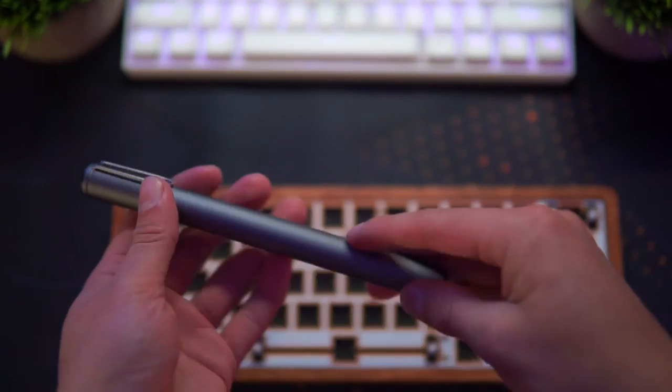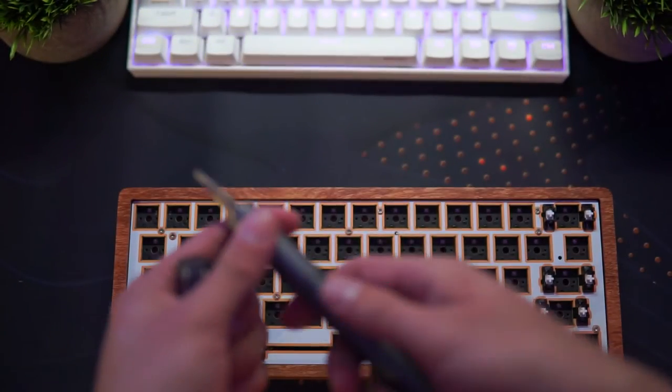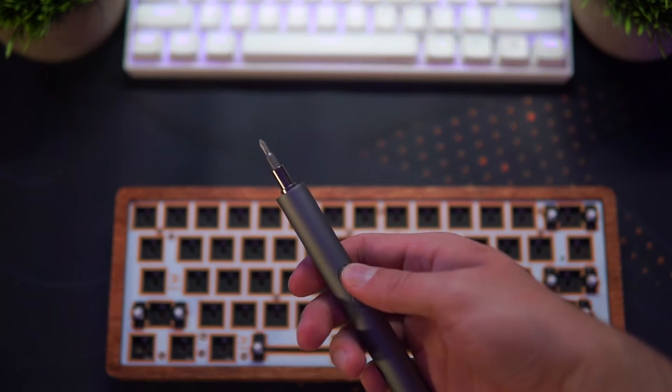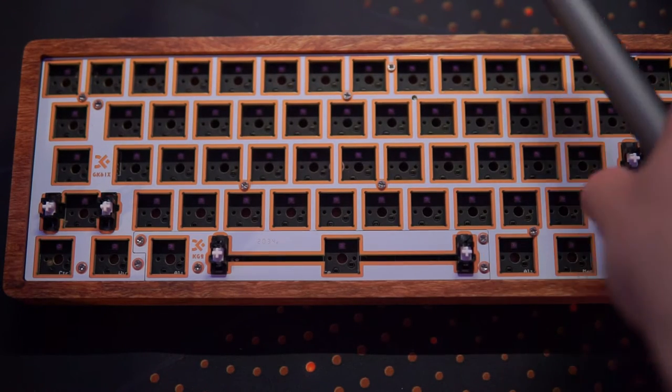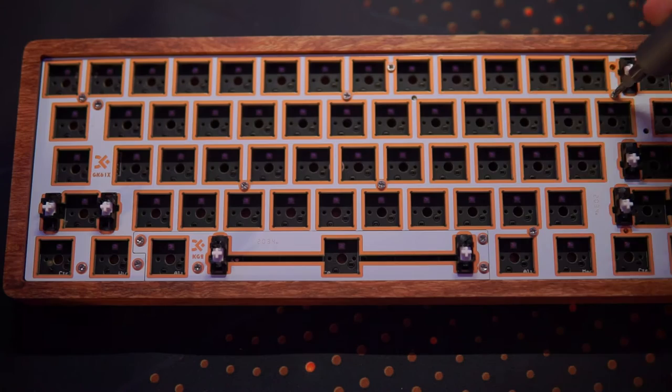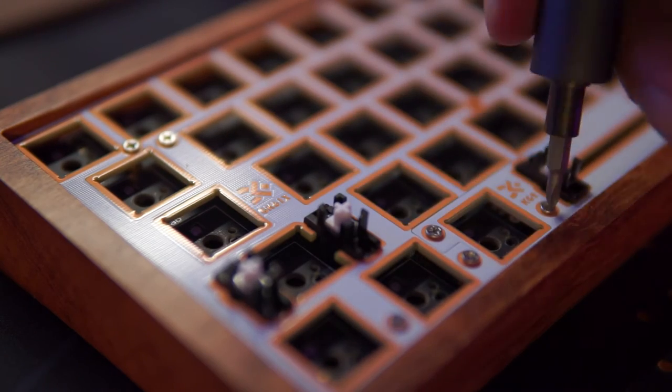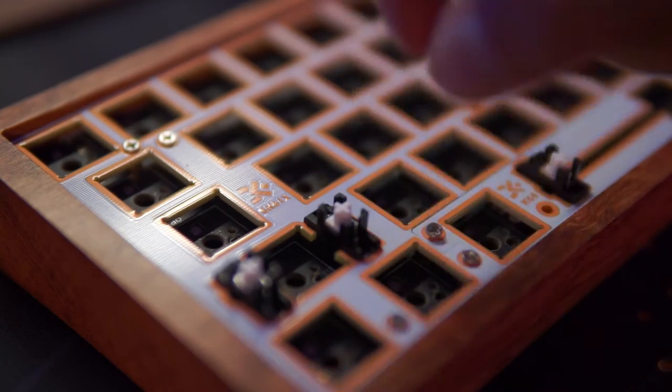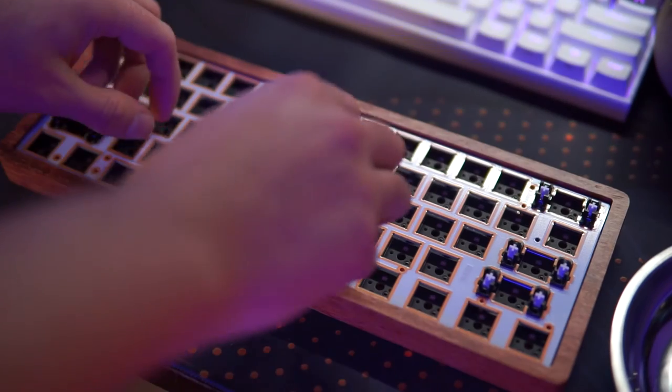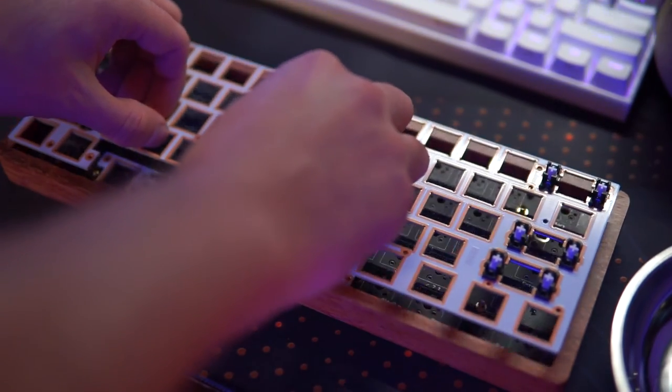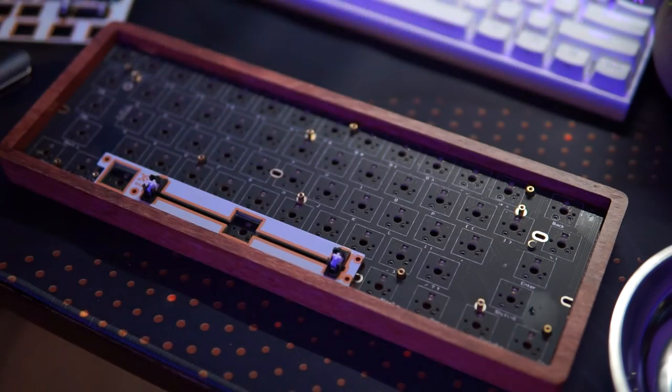Now, while I don't know if this step is completely necessary, I thought it was still a cool little mod to do. I disassembled the DIY kit, removing the plate from the PCB and removing the PCB from the housing. I'm going to add some foam to the case to hopefully help out with the acoustics and make sure it doesn't sound hollow.